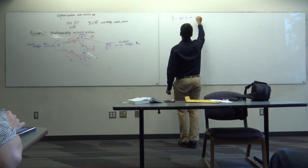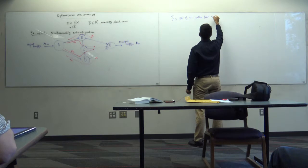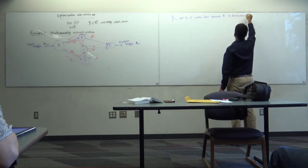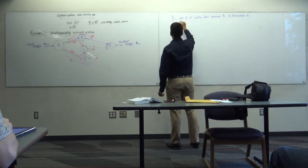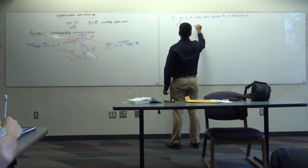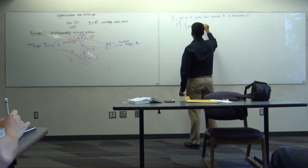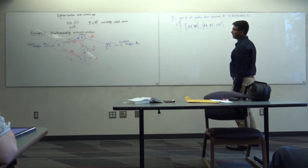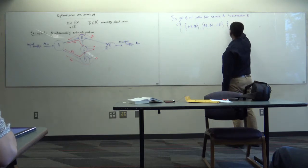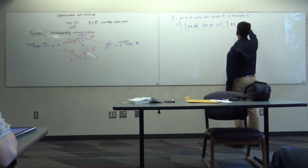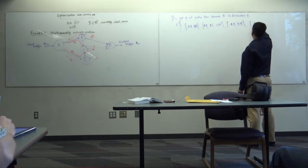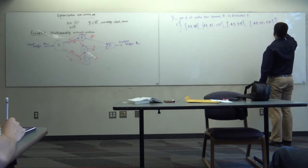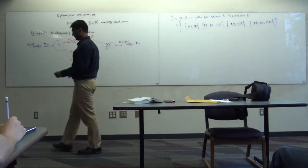Let me make this notion of paths more formal. I define a set P which is the set of all paths from source A to destination E, given by: {AB, BE}, {AB, BC, CE}, {AD, DC, CE}, and {AD, DE}.